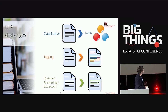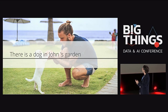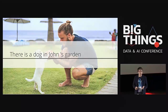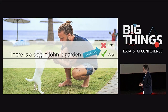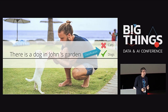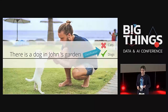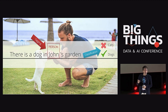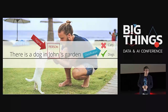Let me give you some concrete examples with the sentence 'There's a dog in John's garden.' A classification model could tell you this document is about dogs. For sequence tagging, you might ask whether any person's name appears — and indeed 'John' gets a person tag while other tokens remain empty.